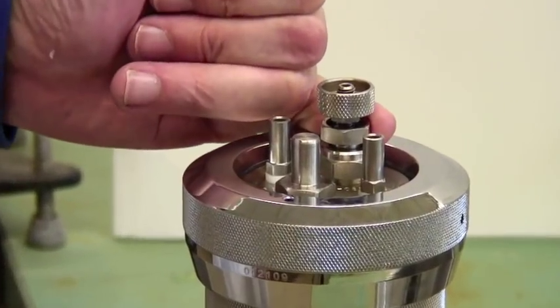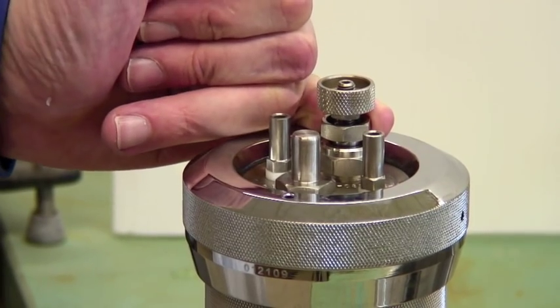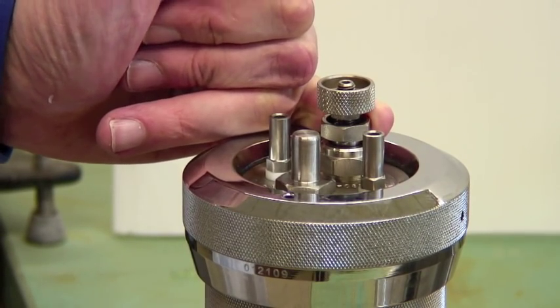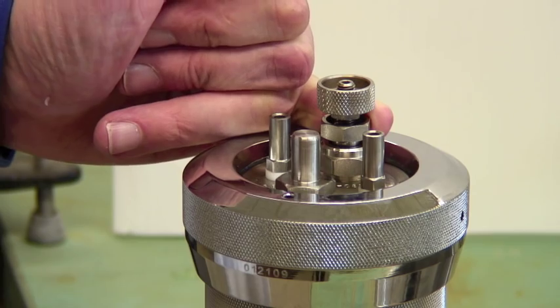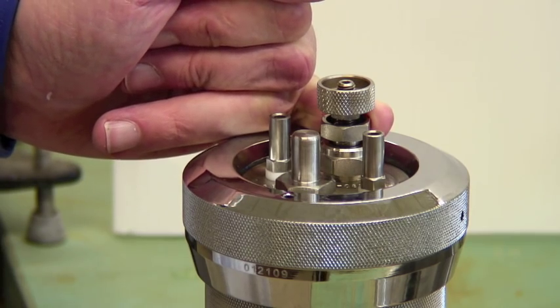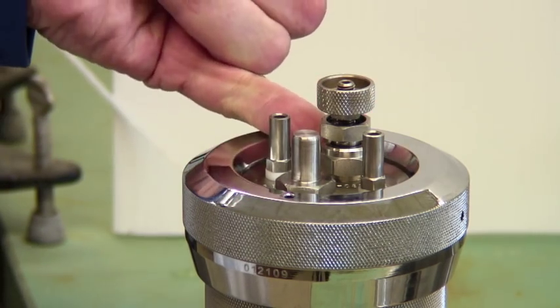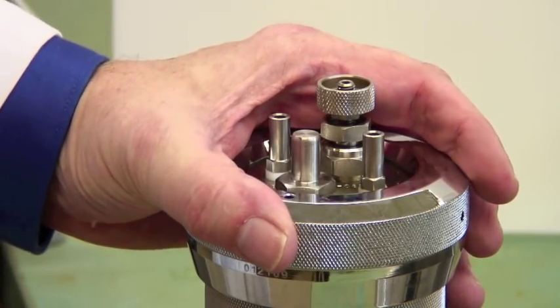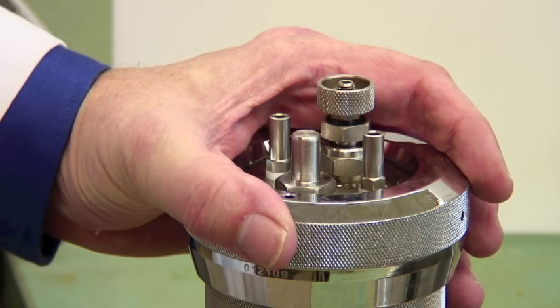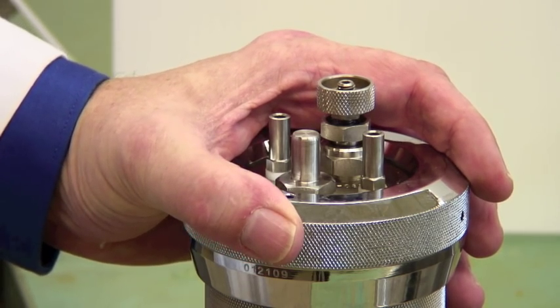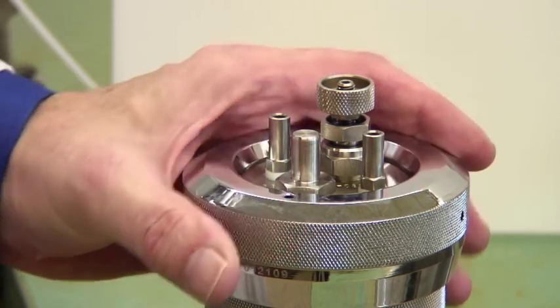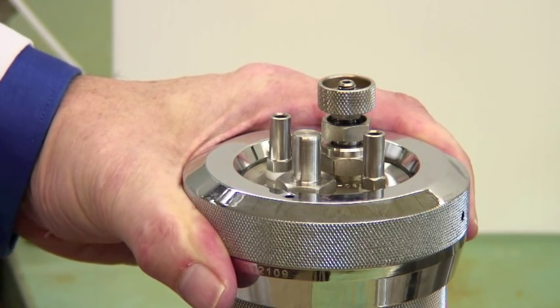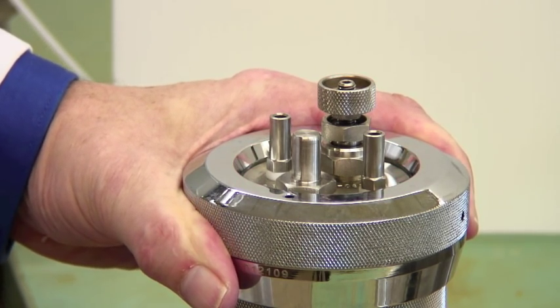Inside the release valve is also a rupture disc. So if for some reason the pressure inside the bomb gets up to about 45, 50 atmospheres, it will blow. It's designed that it will go first rather than having the entire bomb blow, which would be much more damaging. But for that reason, there is an upper limit on the safe pressure in this bomb. We never charge it more than 20 atmospheres.